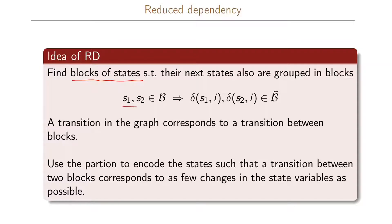For two states s1 and s2, if these are part of a block, then the next state when we have input i for s1 and the next state when we have input i for s2 should also belong to the same block, but not necessarily the same block as s1 and s2 — because the second block here is denoted by b-tilde. A transition in the graph will correspond to a transition between blocks, and we use these partitions to encode the states such that the transition between two blocks corresponds to as few changes as possible in the state variables.